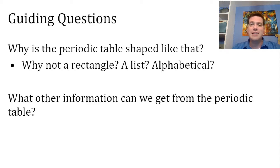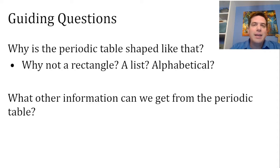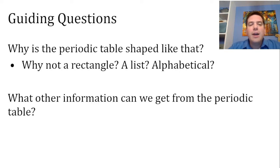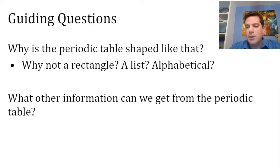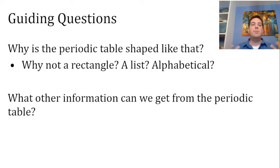Table S is arranged by atomic numbers. Why not make an alphabetical list? Wouldn't that make everybody's life a little bit easier? The other guiding question is: what other information can we get from the periodic table? The answer to that is going to help us understand why the periodic table is shaped the way it's shaped. We can get a lot of information just by looking at where elements are on the periodic table.